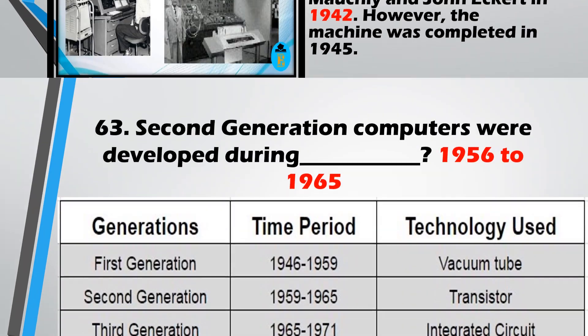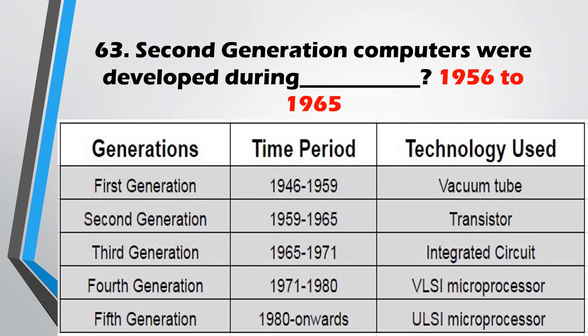Question No. 63: Second generation computers were developed during the period 1956 to 1965. The durations of the other generations can be read out separately.